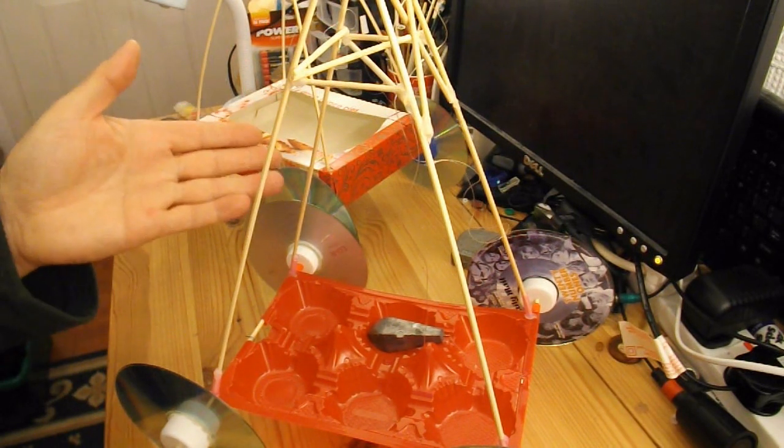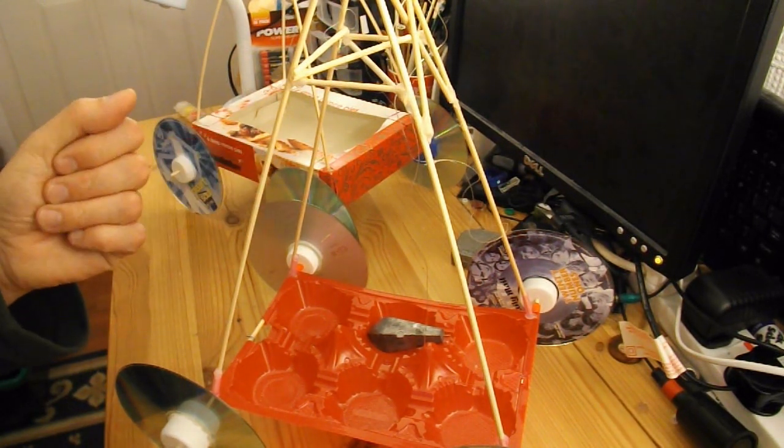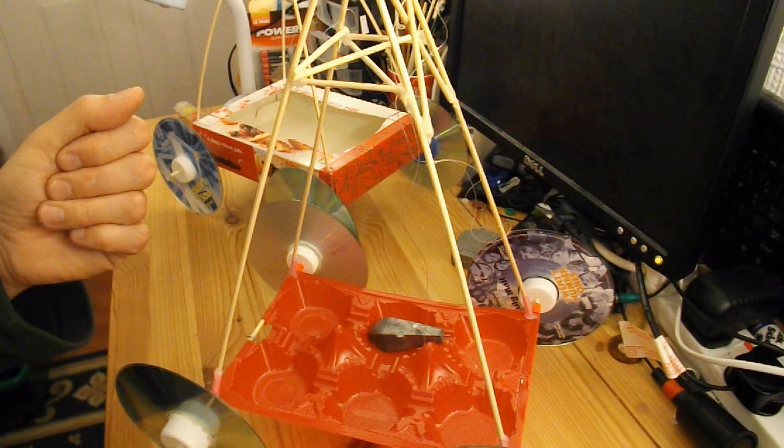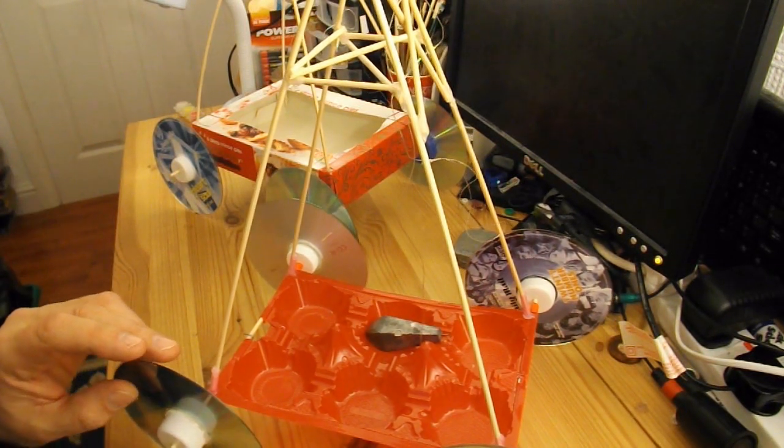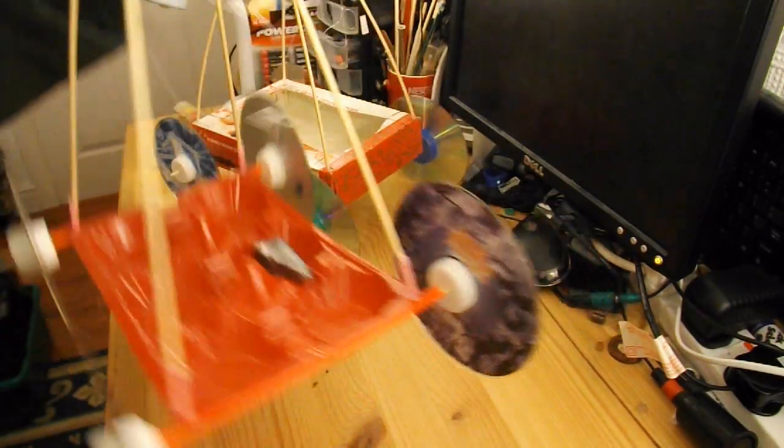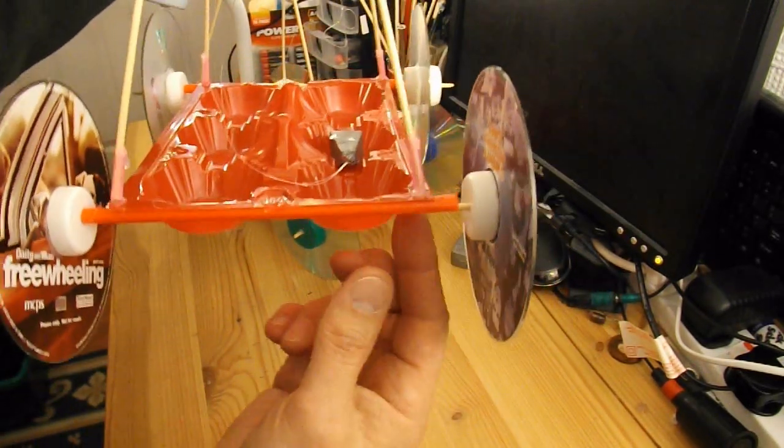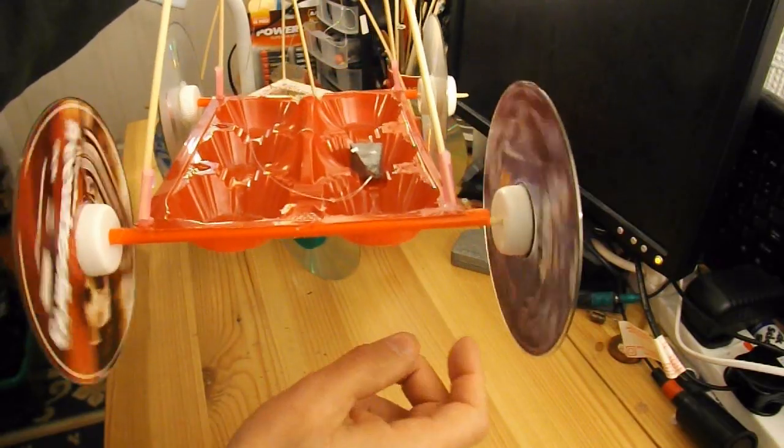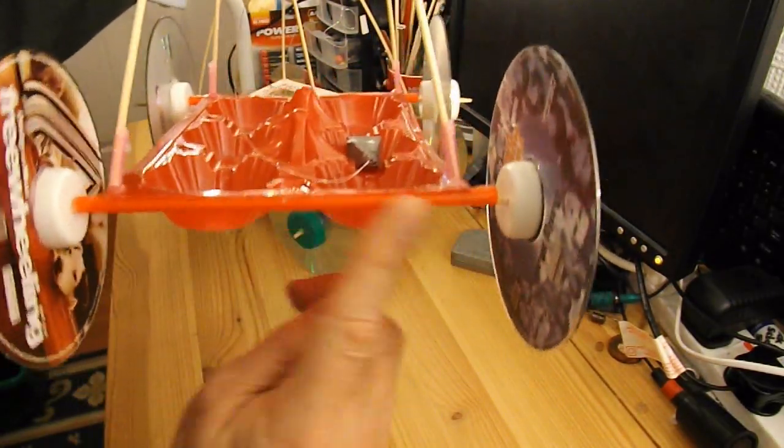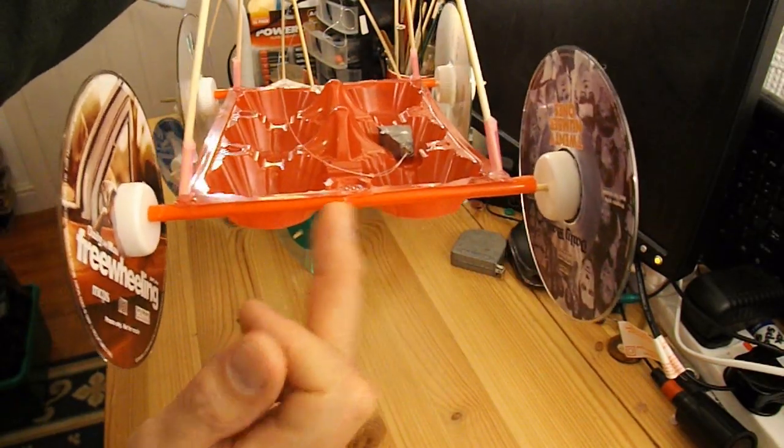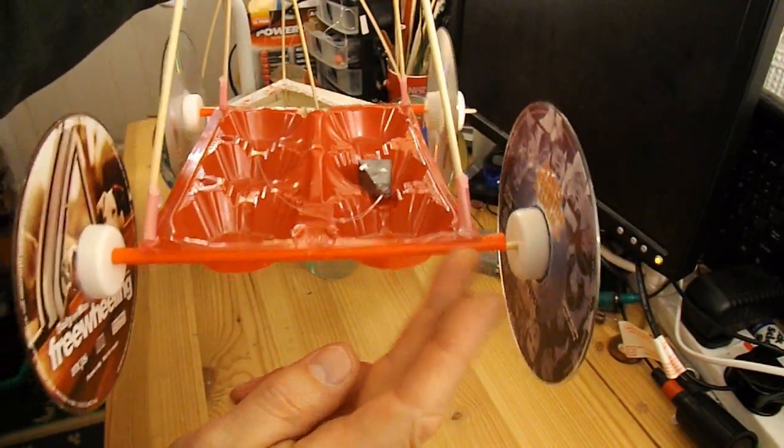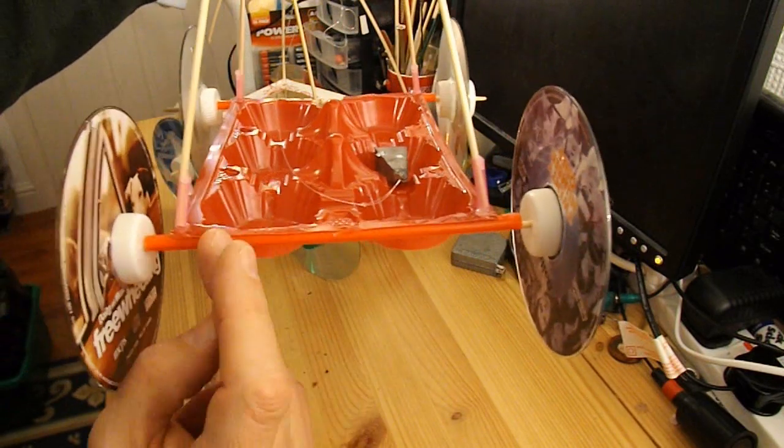So we've now improved the performance of both cars. The next thing I'm going to do is look at the friction on the axles and see if I can improve that. At the moment the axles, which are barbecue skewers, go through these drinking straws. So potentially there's friction all the way along that drinking straw where the axle rubs against it.